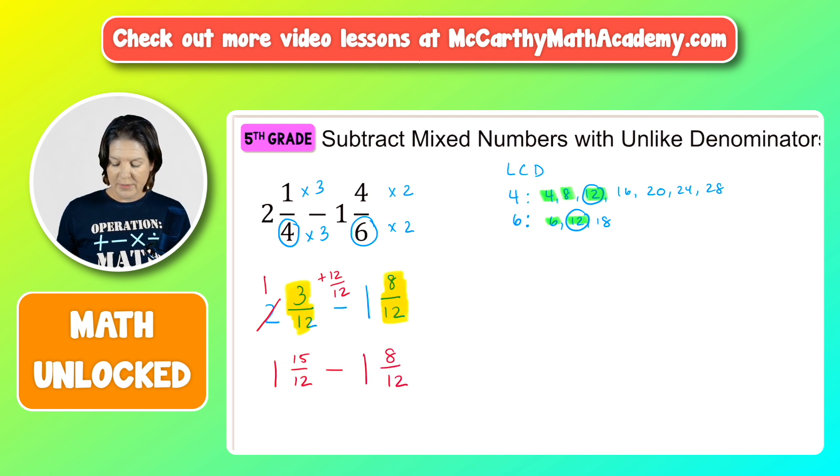Bring the other one down. Now we can subtract: 15/12 minus 8/12. That would be 7/12. And also the whole number: 1 and 1 would be 0 and 7/12, but we don't really write it like that. The final answer would be 7/12 right there.